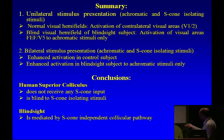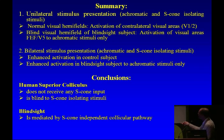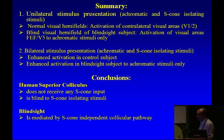To summarize: with achromatic and S-cone-isolating stimuli in normal visual hemifields, there is no problem activating areas V1 and V2. In the blind hemifield of blindsight subjects, there is activation of frontal eye fields and V5 to achromatic stimuli only. For bilateral stimulus presentations, there is enhanced activation in control subjects and enhanced activation in blindsight subjects to achromatic stimuli only. To conclude: the human superior colliculus does not receive any S-cone input — it is blind to S-cone-isolating stimuli. Therefore, blindsight is likely mediated by an S-cone-independent collicular pathway.